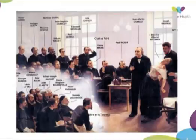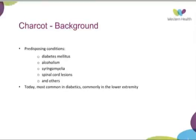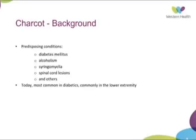Looking at the background of Charcot and predisposing conditions: it was originally thought to be tabes dorsalis or tertiary syphilis that causes Charcot, and that went on for many years, including in Charcot's own description. But the predisposing conditions today are diabetes, alcoholism, syringomyelia, and spinal cord lesions, with some other minor ones associated. In our society today, diabetes is the most common predisposing condition.